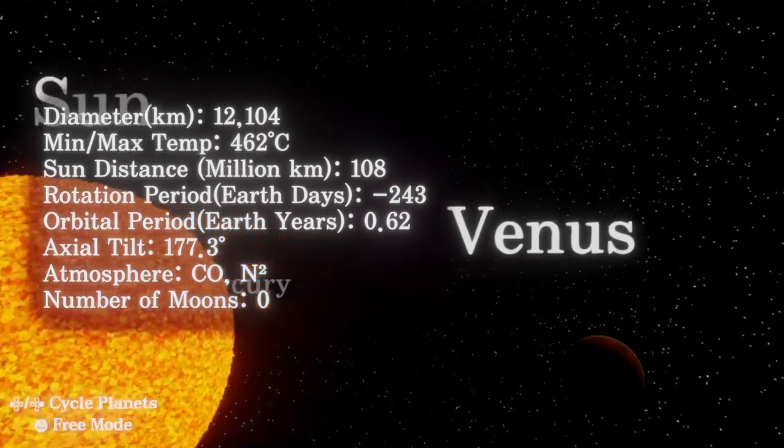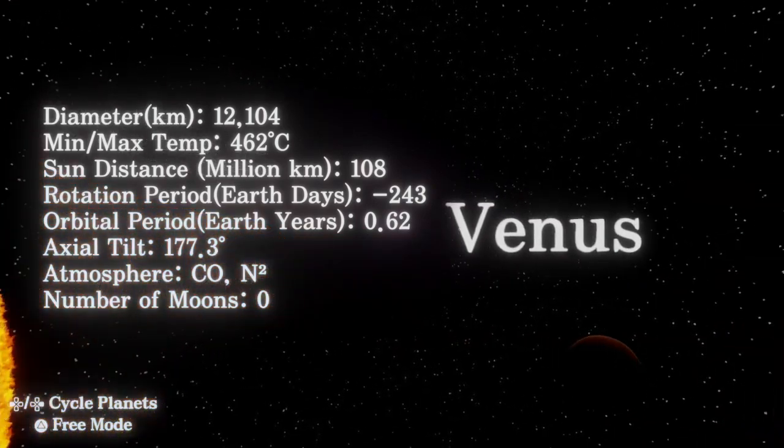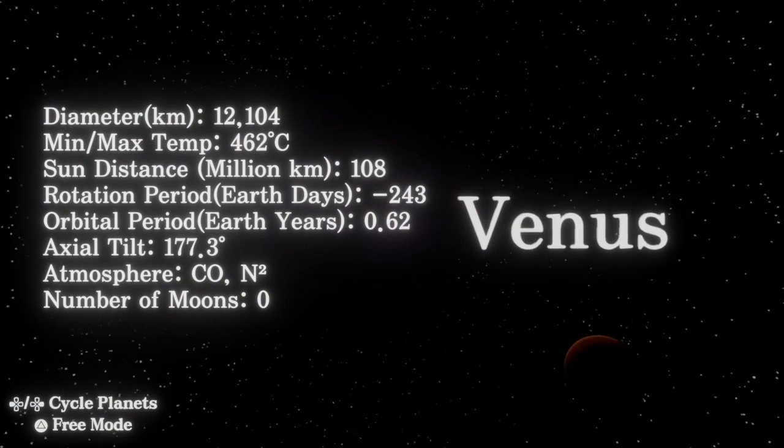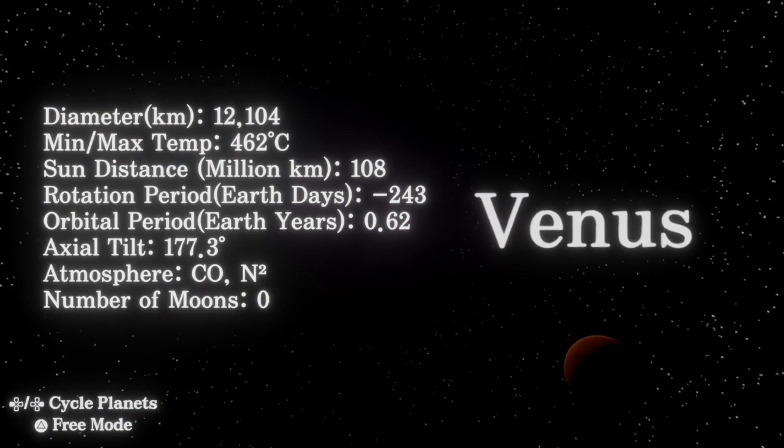Venus: the dense atmosphere is made up of 96% carbon dioxide, and the pressure is 92 times that of Earth's. That's equivalent to the pressure of being 900 meters underwater.